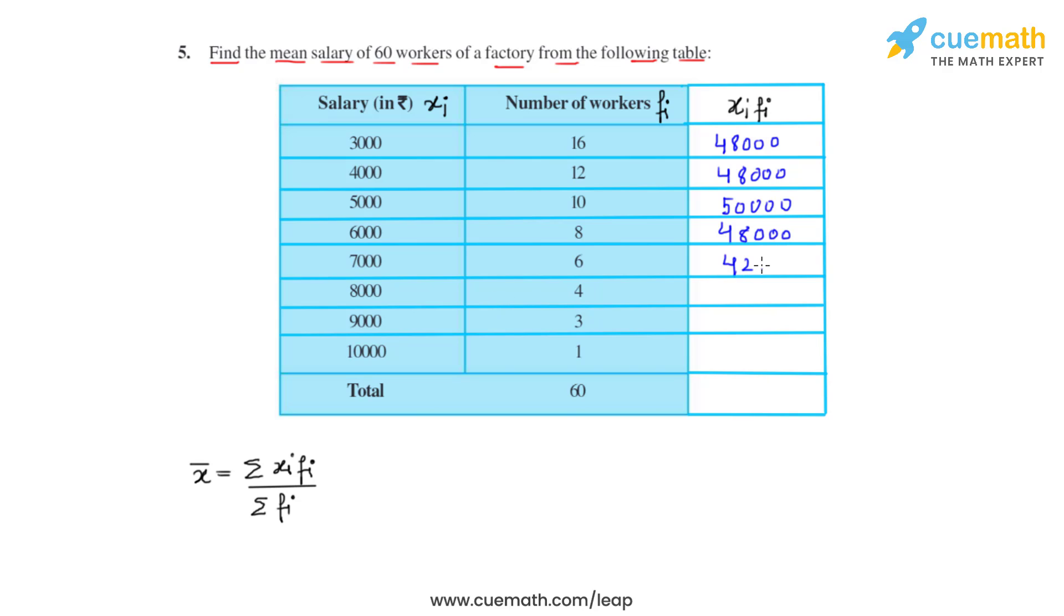We continue with forty two thousand, thirty five thousand, twenty seven thousand, and finally ten thousand. We will have to find its summation. The sum of all of these is three lakh five thousand and the total number of workers that we have in the factory is sixty, so we can directly substitute it. We substitute three lakh five thousand and divide that by sixty.